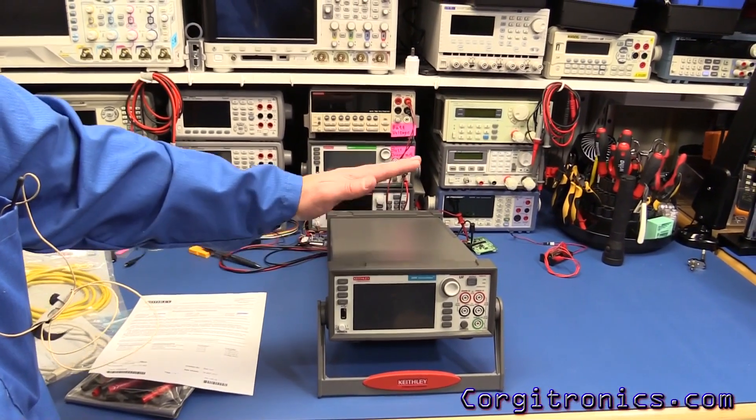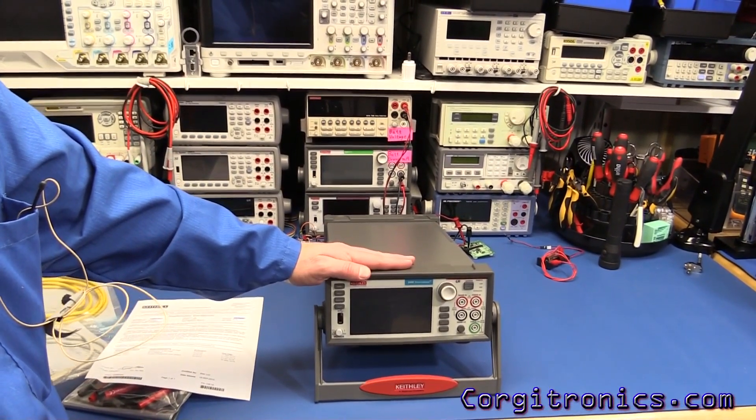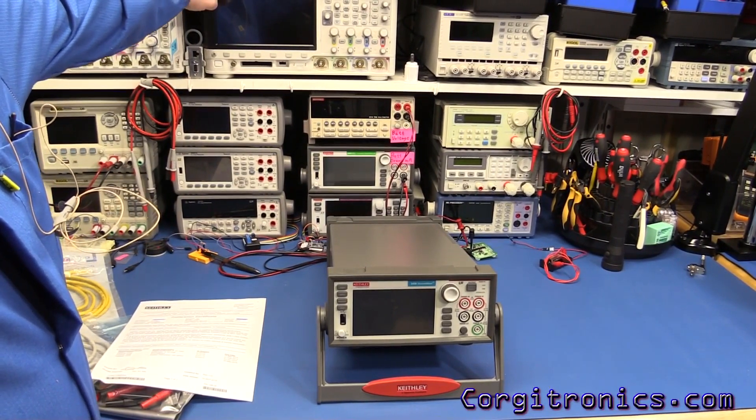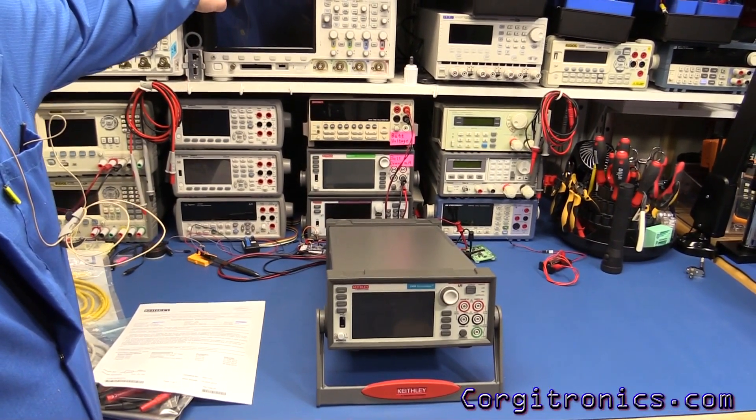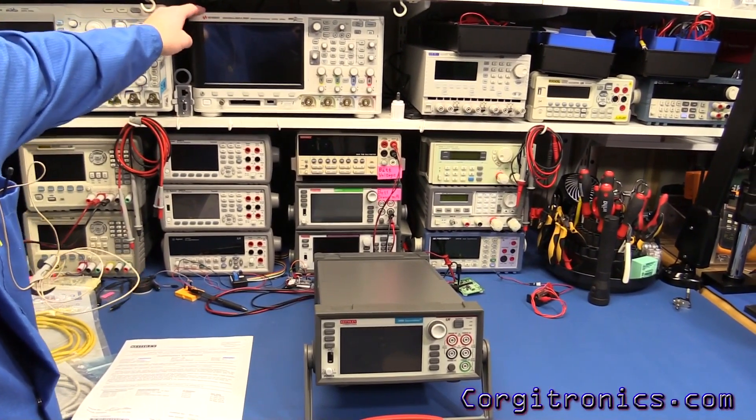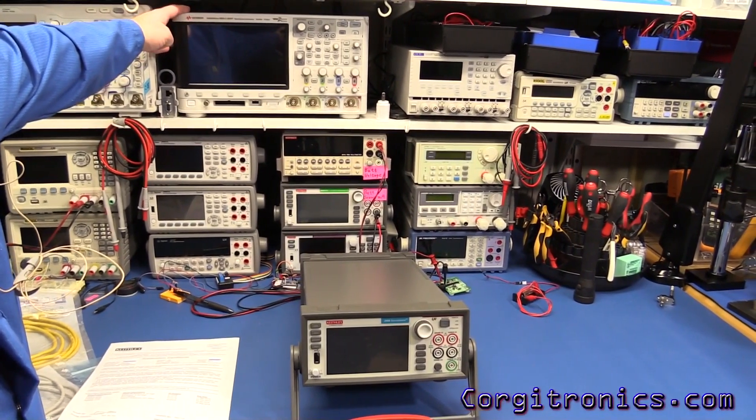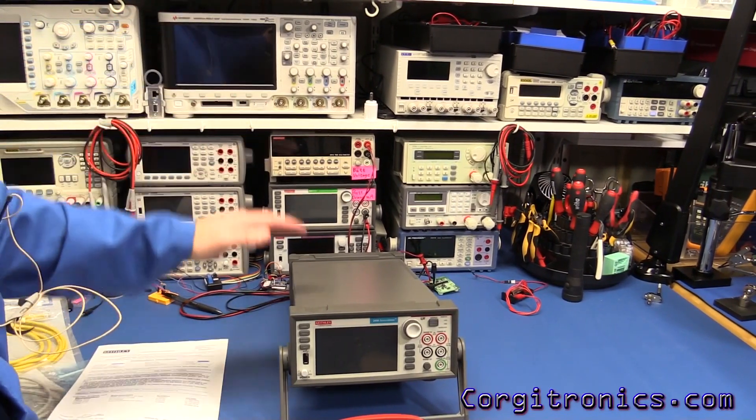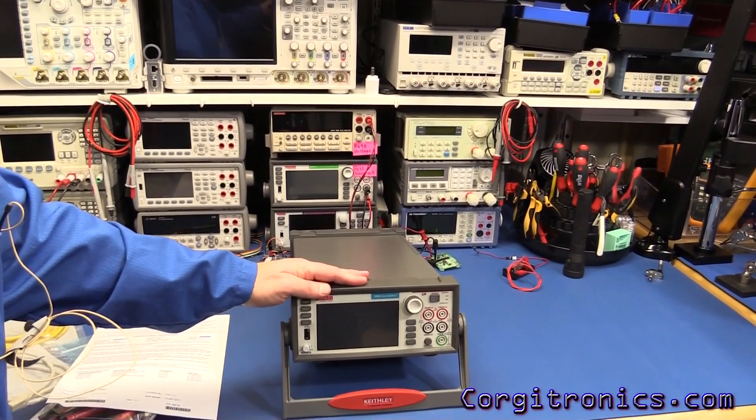So thanks to test equity for getting this gear out so quickly to me. That's really nice. So I've got the 2450 source meter and the Keysight MSOX 3024T, that's the touchscreen unit. And test equity got that to me, what, they shipped it about two hours after I placed the order. So that's really great, thanks to them for getting it out the door so quickly.